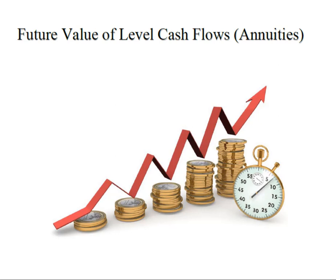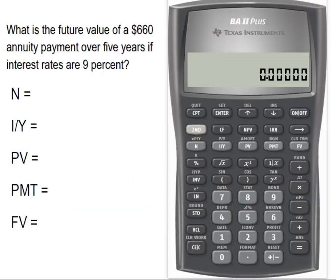Level sets of frequent cash flows are really common in finance and we just refer to them as annuities. The first cash flow of an annuity occurs at the end of the first year or other time period, and it will continue every year until the last period. So what is the future value of a $660 annuity payment over five years if the interest rate is 9%?